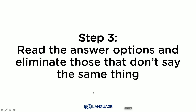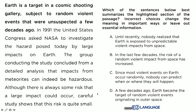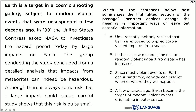Step three: read the answer options and eliminate those that don't say the same thing. Option A: 'Until recently, nobody realized that Earth is exposed to unpredictable violent impacts from space.' Not bad. Option B: 'In the last few decades, the risk of random violent impacts from space has increased.' I didn't say anything about increasing.